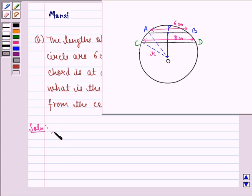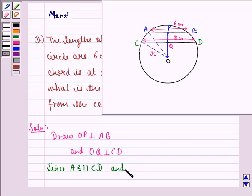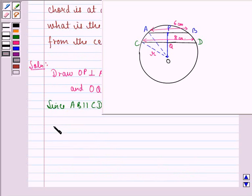Now we draw OP perpendicular to AB and OQ perpendicular to CD. Since AB is parallel to CD and OP stands perpendicular on AB, OQ stands perpendicular on CD.